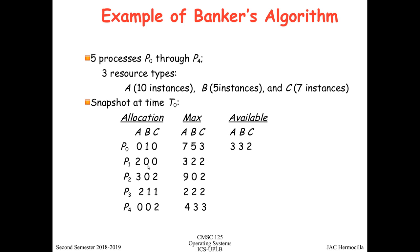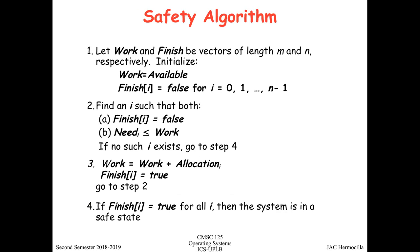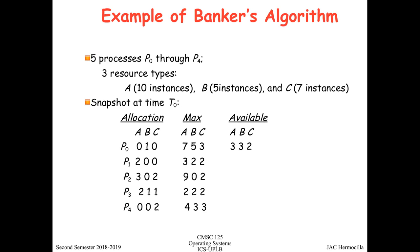Resource type B has five total instances, and checking the allocated amounts sums to five, consistent with the snapshot. This is the state of the system at time T0, and you can run the safety algorithm to check whether the system is in a safe state.